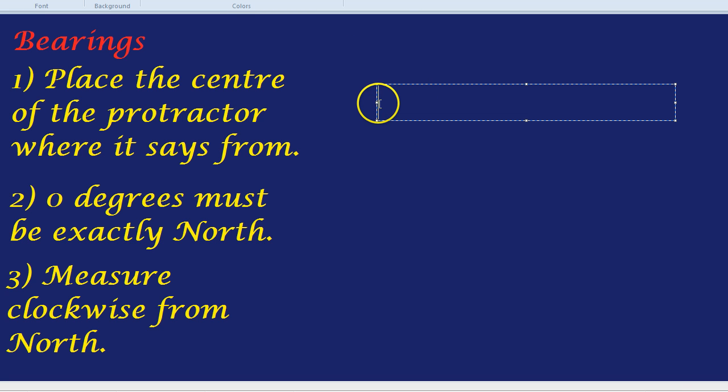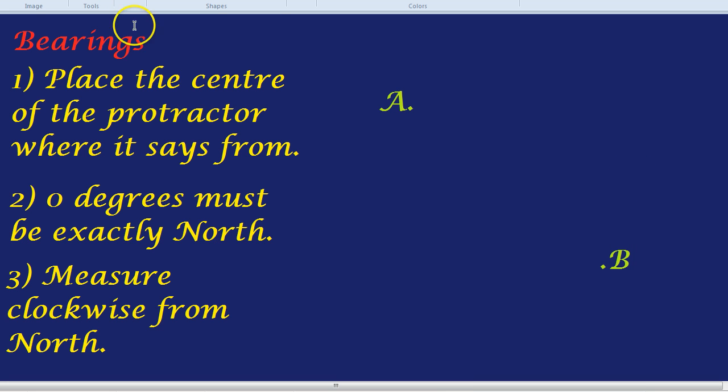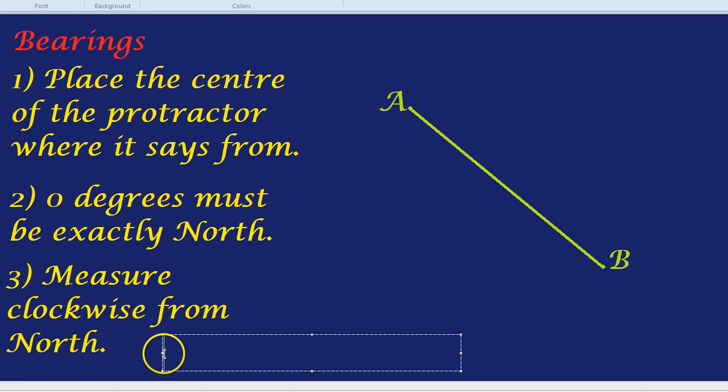We're going to have town A placed there where the dot is. And town B is a nice town, I advise you to visit sometime, it's got nice beaches right there at the dot. And there's a nice road between them with nice seaside views. There's the road. And the question we have today is measure the bearing of town B from town A.